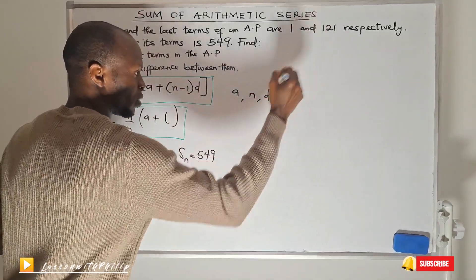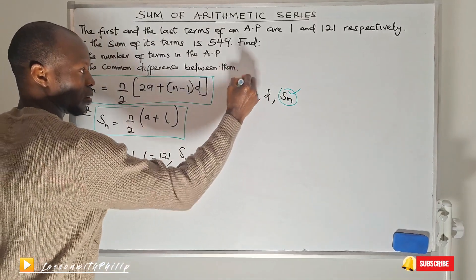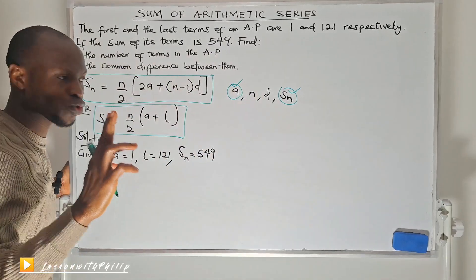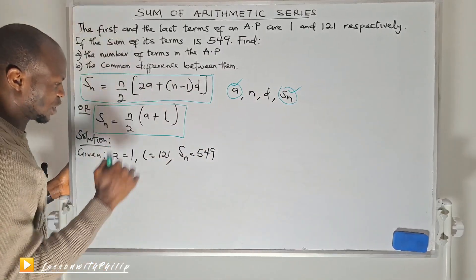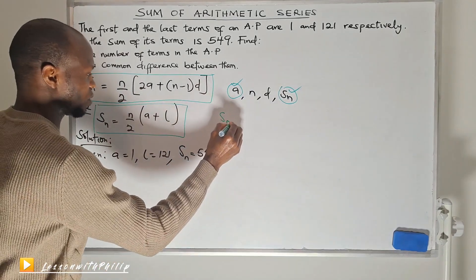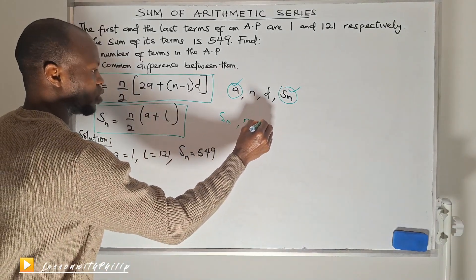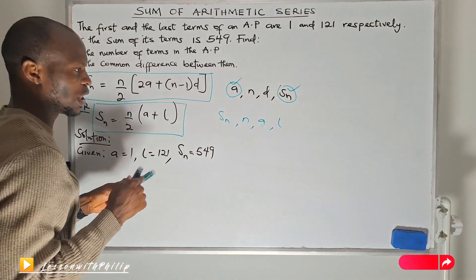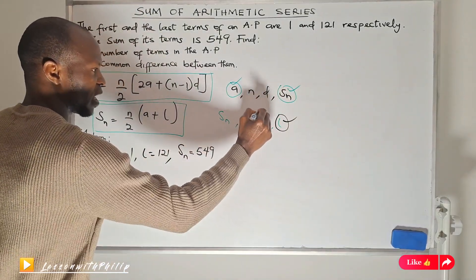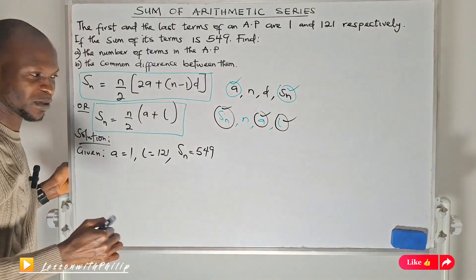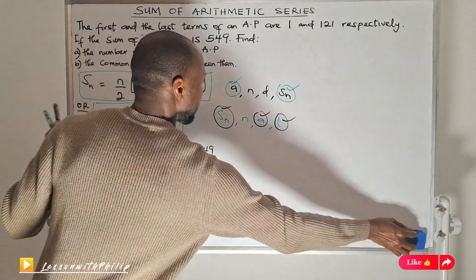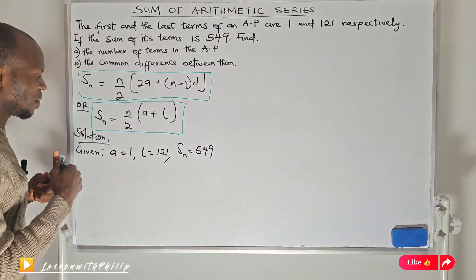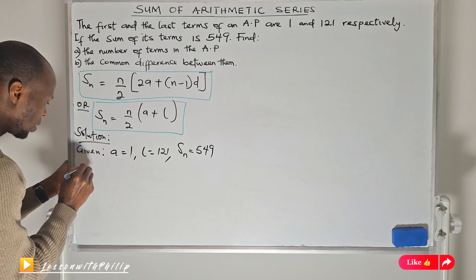I know the first term but not the common difference and not the number of terms — those are the two unknowns. For the second formula, you need the sum, the number of terms, the first term, and the last term. In this question, I know the last term, the first term, and the sum, so I can find the number of terms using the second formula.